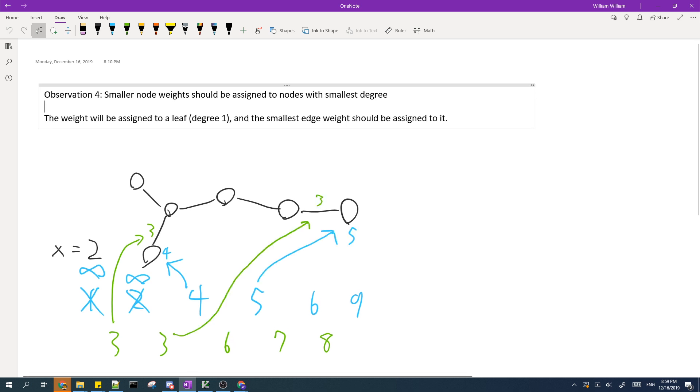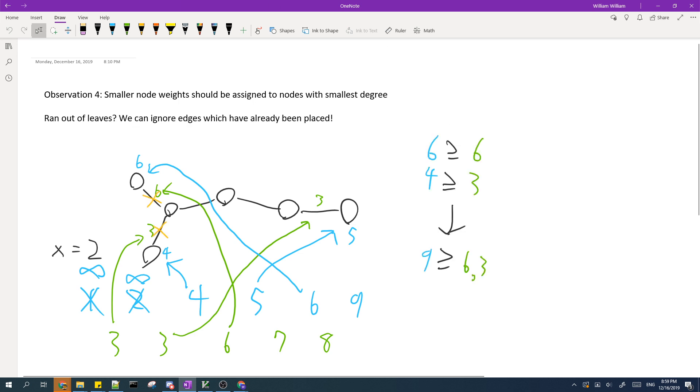We can continue to do this for additional node weights and edge weights. So in here we set this node to 5 and this edge to 3. We do the same thing for this node weight and edge weight. But by now you might have realized that we don't have any more leaves yet. But that's not a problem because we can simply ignore these edges and consider this node as a leaf.